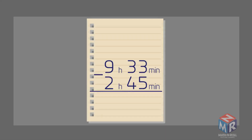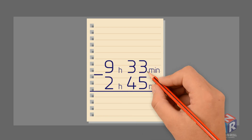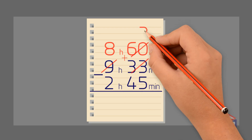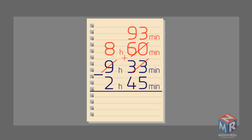Let's try another example. Take a look at the minutes. Because 33 is smaller than 45, and we can't subtract 45 from 33, we need to borrow an hour. We had 9 hours, and now we have 8 hours. Instead of carrying 1 hour, we carry 60 minutes, because there are 60 minutes in 1 hour. 60 plus 33 becomes 93 minutes. Now we can subtract 45 from 93 — it is 48 minutes. 8 hours minus 2 hours is 6 hours. So the answer is 6 hours and 48 minutes.